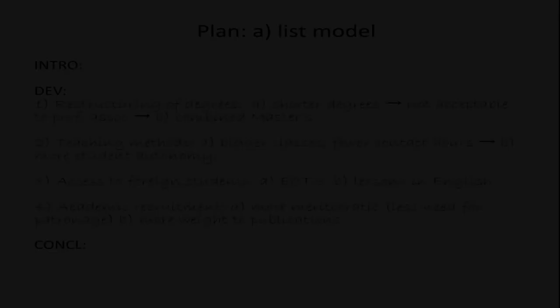If we're using the list model, then this is quite straightforward. We would talk about each of the four areas in turn, beginning with the one that we consider to be most important. And so, transferring the information from the mind map to the plan, we'd get something like this.